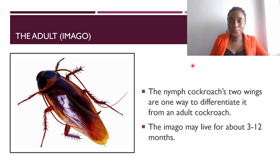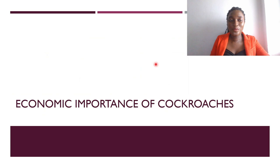Then we have the adult stage, also referred to as the imago. In the adult stage, there are mainly two wings, and that is one way to distinguish between the nymph and the imago. Another distinction is that the adult is also sexually mature. The imago may live for about three to twelve months.